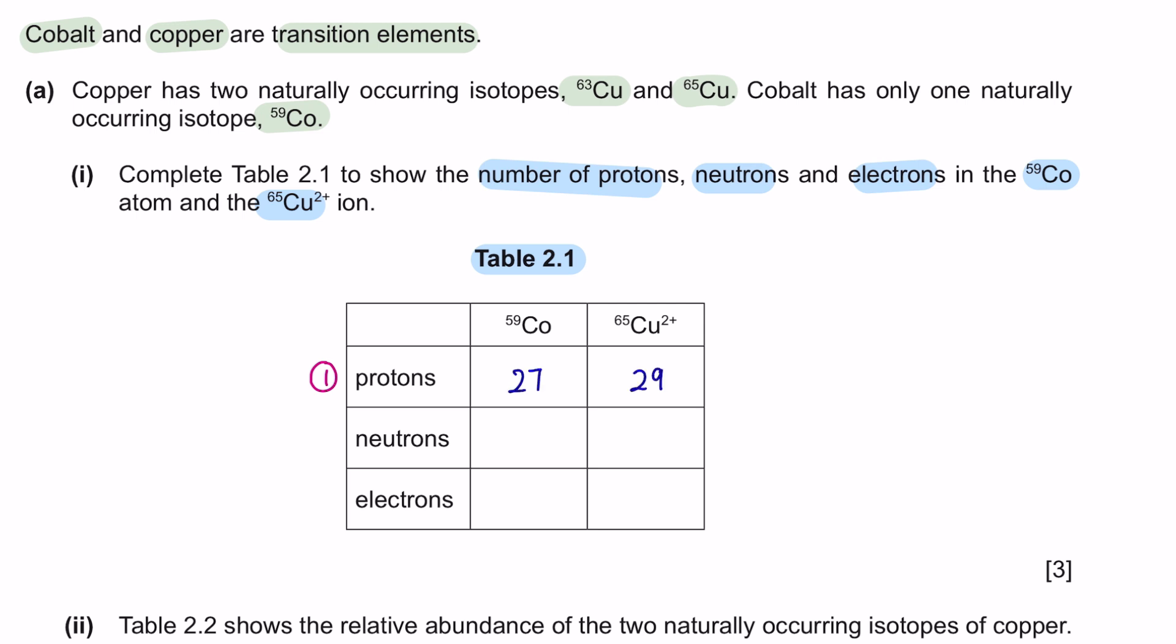Next is the neutrons number. In a nucleon notation, X here represents the symbol of the element. For instance, it will be Co for cobalt, and the number at the top here is the nucleon number and the number at the bottom is the proton number. Nucleon number is the total sum of proton number plus neutrons number in the nucleus of an atom. To find the neutron number, we're gonna take the nucleon number minus the proton number, which is 27, giving us 32. We'll do the same thing for copper 2 plus ion: nucleon number 65 minus its proton number 29, we get 36.